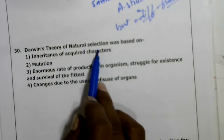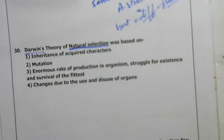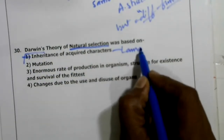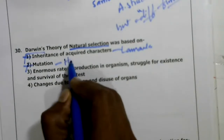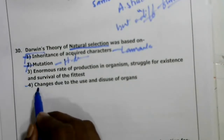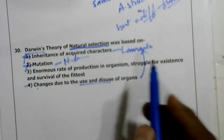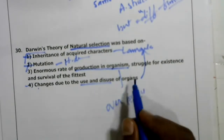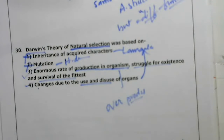Thirtieth question: Darwin's theory of natural selection was based on — inheritance of acquired characters is by Lamarck, mutation theory is by Hugo de Vries, use and disuse is also Lamarck's. Darwin's theory of natural selection is based on overproduction, struggle for existence, and survival of the fittest. The third option — overproduction — is the correct answer.